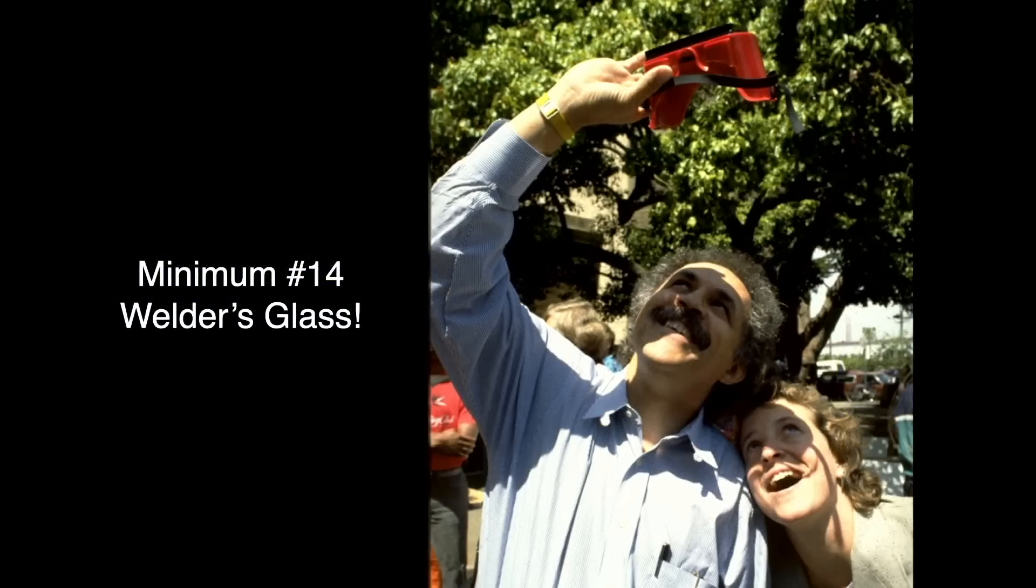These folks are looking through welder's glass. You must use number 14 density filters or greater, which reduce the sun's light by a factor of 270,000. Do not use filters designed for brazing. They allow through too much light. A good rule of thumb, if the sun looks too bright, it is. Don't use that filter.